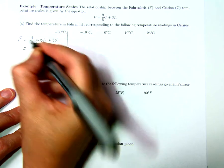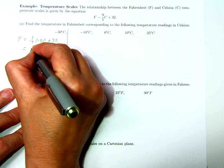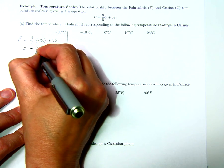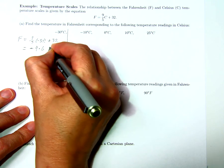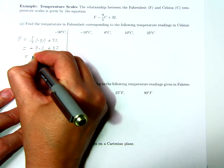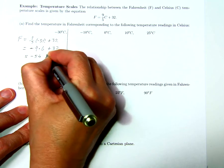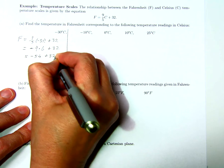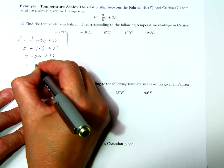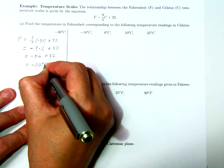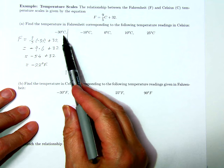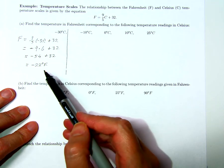This is equal to negative 9 times 30 over 5, which is 6, plus 32. And that's negative 54 plus 32, which equals negative 22 degrees Fahrenheit. So when the temperature is minus 30 degrees Celsius, it's minus 22 degrees Fahrenheit.